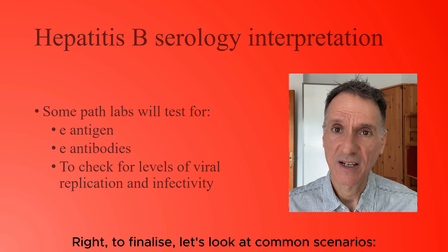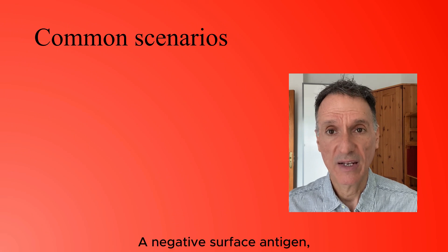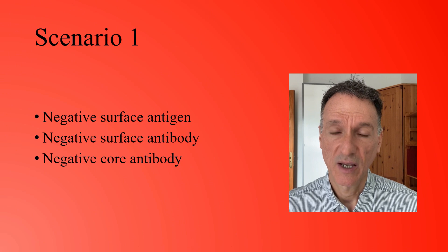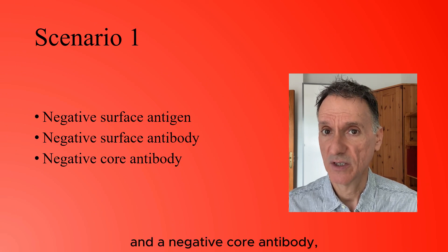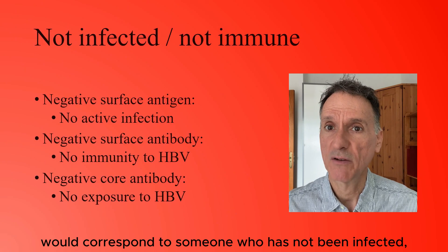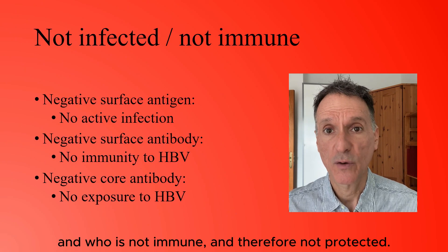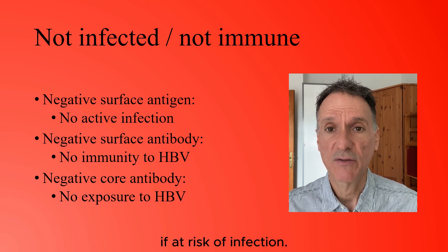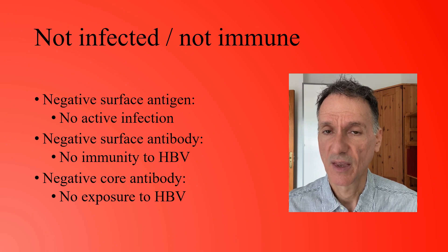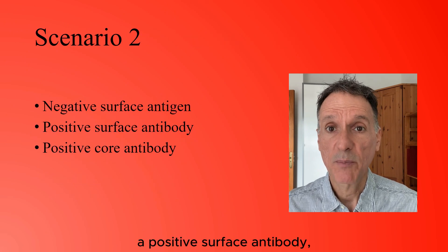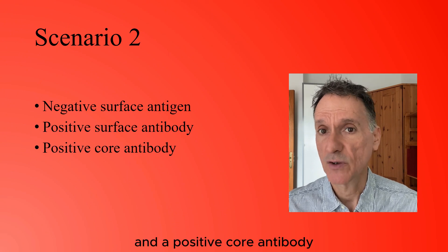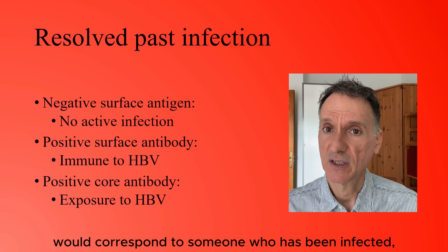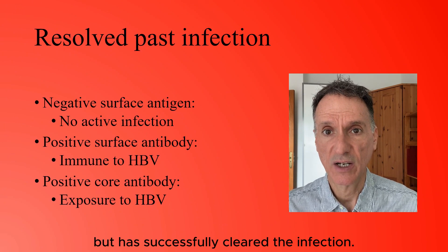Let's look at common scenarios. A negative surface antigen, negative surface antibody, and negative core antibody corresponds to someone who has not been infected and is not immune, therefore not protected — these people should be advised vaccination if at risk. A negative surface antigen, positive surface antibody, and positive core antibody corresponds to someone who has been infected but has successfully cleared the infection.